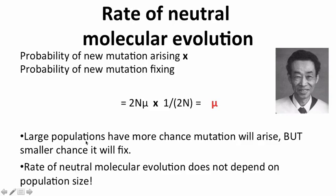This is really cool, because large populations have more chance the mutation will arise, but a smaller chance it'll fix by genetic drift since the starting allele frequency is so much lower. In contrast, smaller populations have a lower chance the mutation will arise, but a higher chance it'll fix because the starting allele frequency is higher. Because of this amazing canceling out, the rate of neutral molecular evolution does not depend on population size. This was first described by Motoo Kimura, whose picture is shown here. So how can we use this calculation?